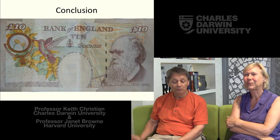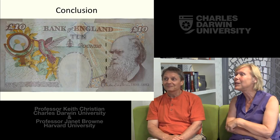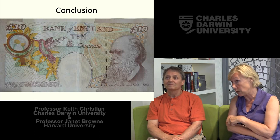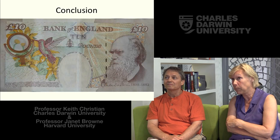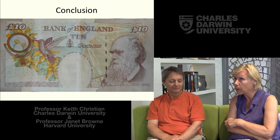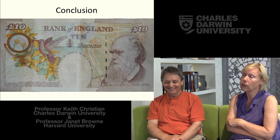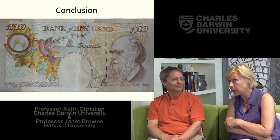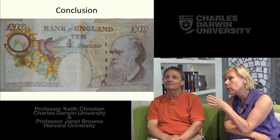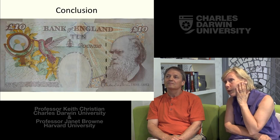Darwin's legacy lives on in many ways, not only in biology but in popular culture. He's become a big hero in the United Kingdom — he's been put on the ten pound note. He's on the tenner for a long time now, though he's coming off next year, so if you want a souvenir, now's the time. That's worth about 20 Australian dollars. On the left side of the note there are symbolic representations of his voyage and his work.